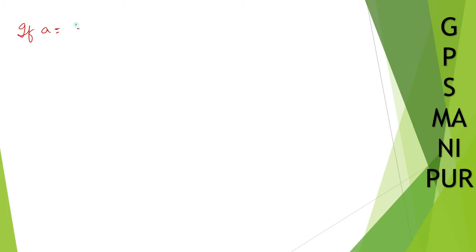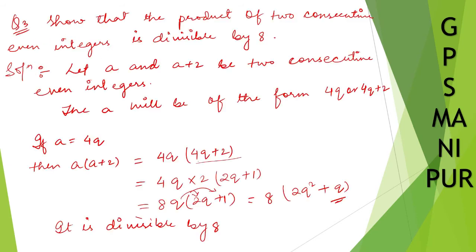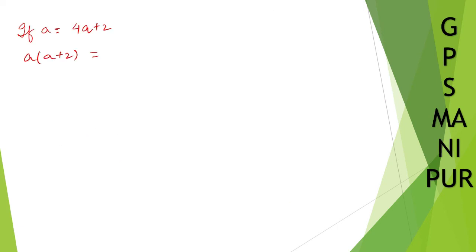Now we have another case, and that is if a is equal to 4q plus 2. Then a into a plus 2 will become, instead of, look, first we have put a is equal to 4q. Now we are putting a is equal to 4q plus 2, and we have multiplied a into a plus 2. So a into a plus 2 will be 4q plus 2, a will be 4q plus 2, and a plus 2 will be 4q plus 2 plus 2.